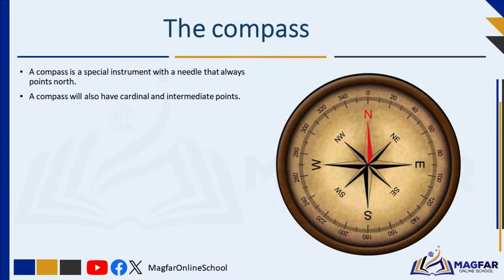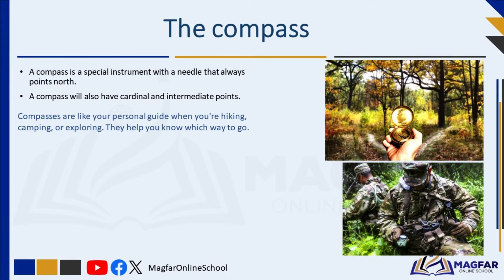A compass is a special instrument with a needle that always points North. A compass will also have cardinal and intermediate points, but the needle will always point to the North. A compass is a handy device that helps you figure out directions. Compasses are like your personal guide when you're hiking, camping, or exploring — they help you know which way to go.